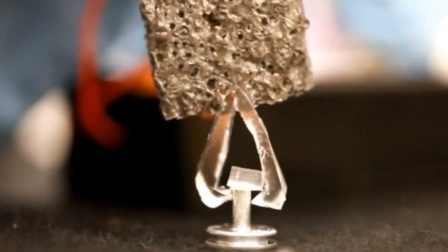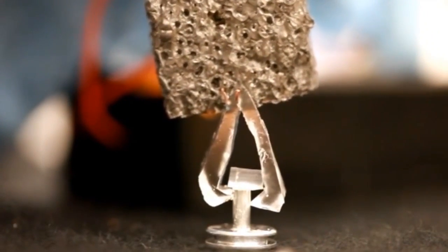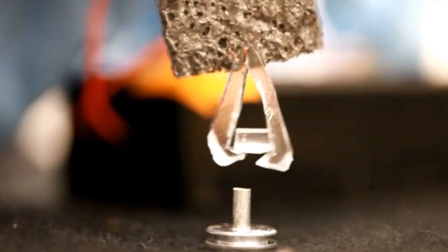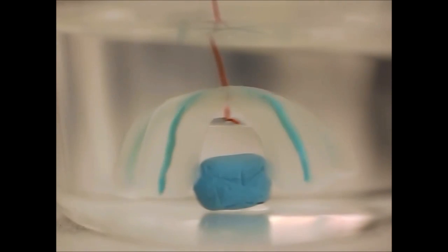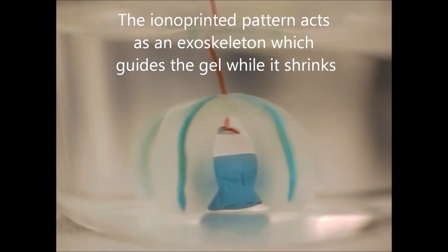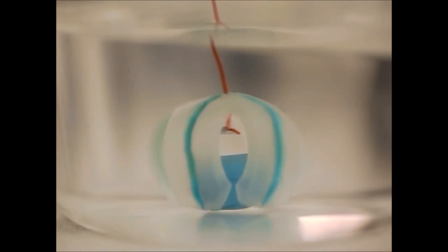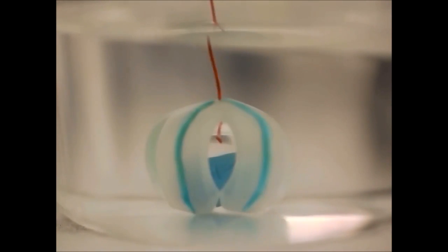By targeting specific areas of the hydrogel shapes, the researchers were able to maneuver the form. The more ions they injected, the further the shape would bend. With the right amount of injected ions and a more durable structure, the researchers were able to manipulate objects with the hydrogel bots.